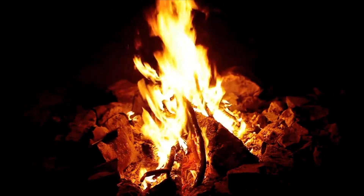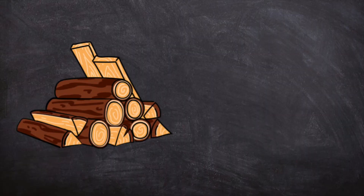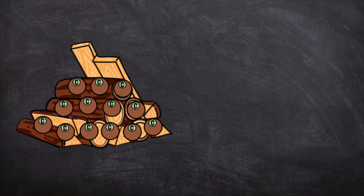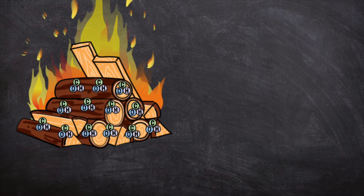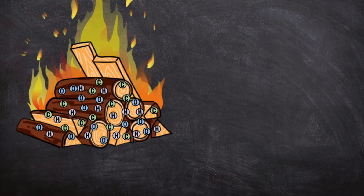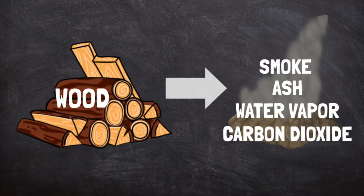As the fire burns, molecules of wood are made of elements like carbon, oxygen, and hydrogen. As the wood burns, the molecules break apart. Those same atoms of carbon, oxygen, and hydrogen bond together in new ways to create smoke, ash, water vapor, and carbon dioxide. The wood didn't disappear — it changed into something else.